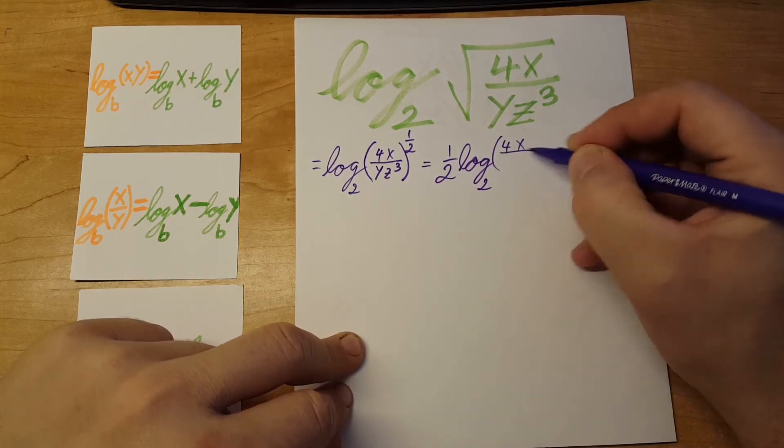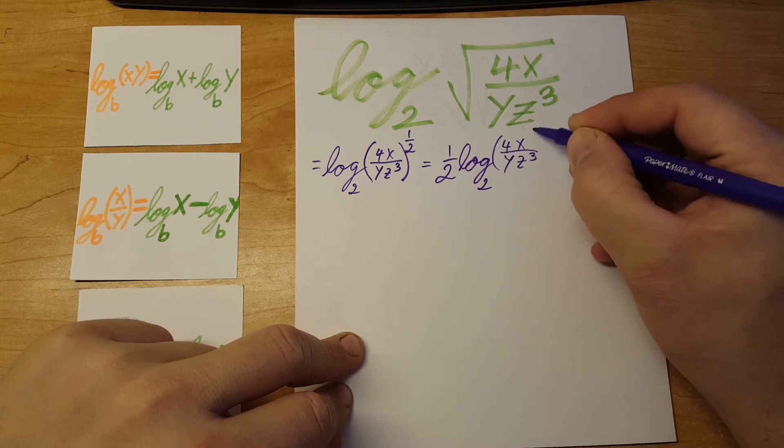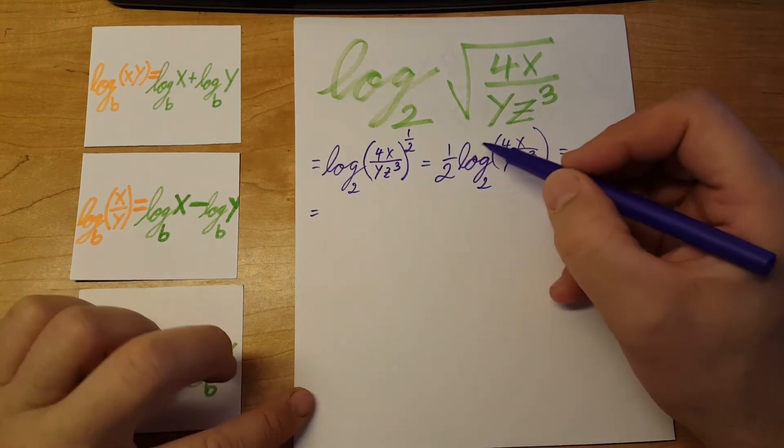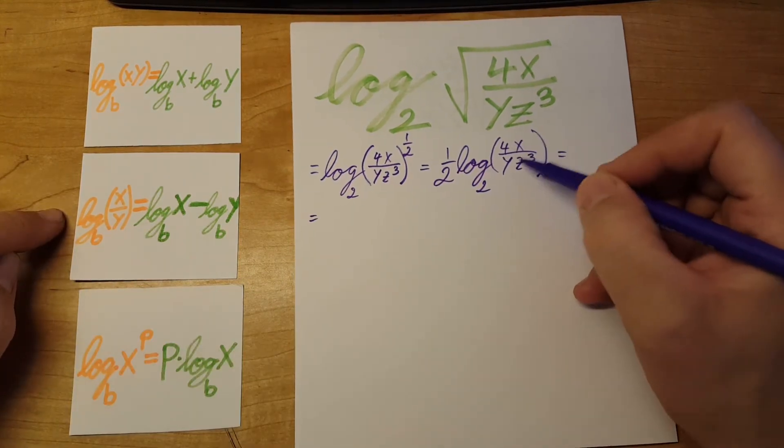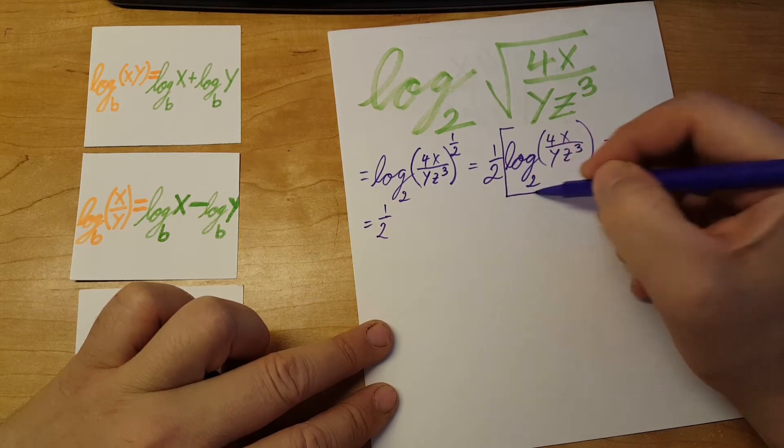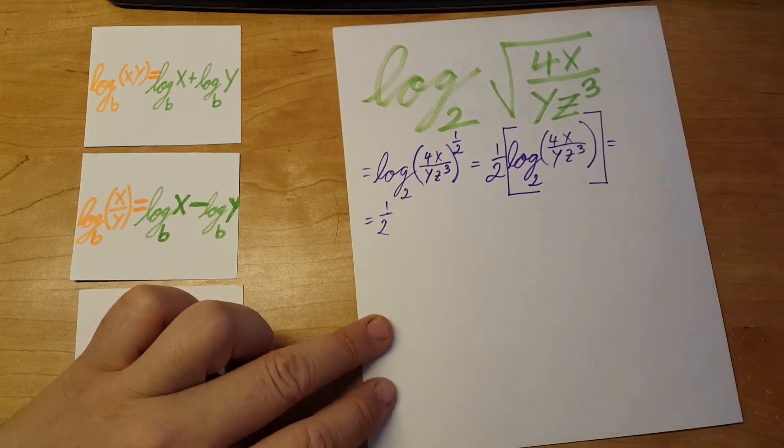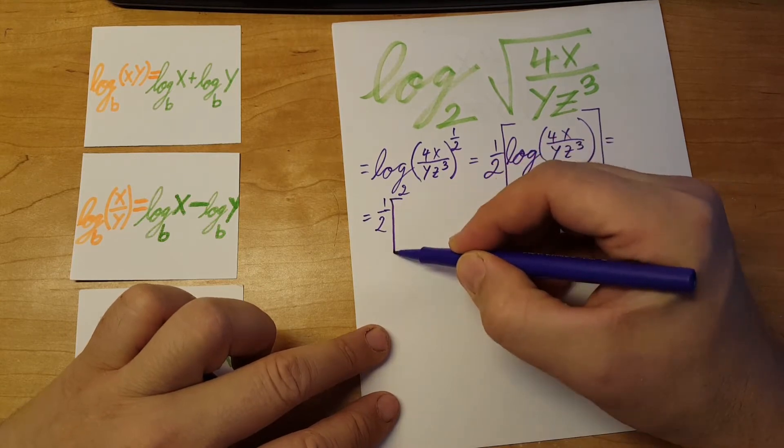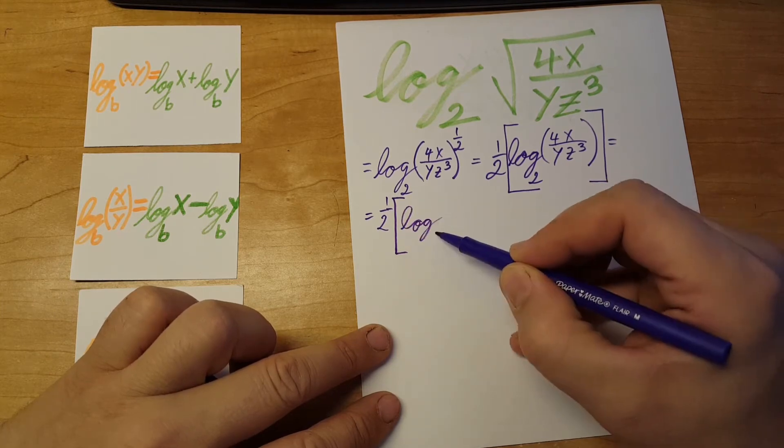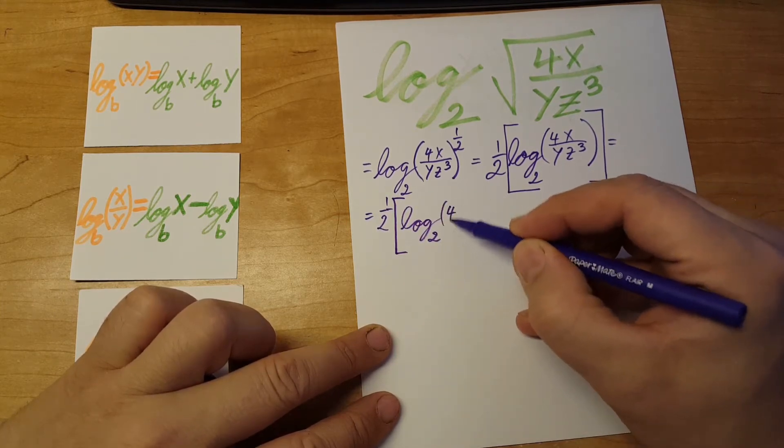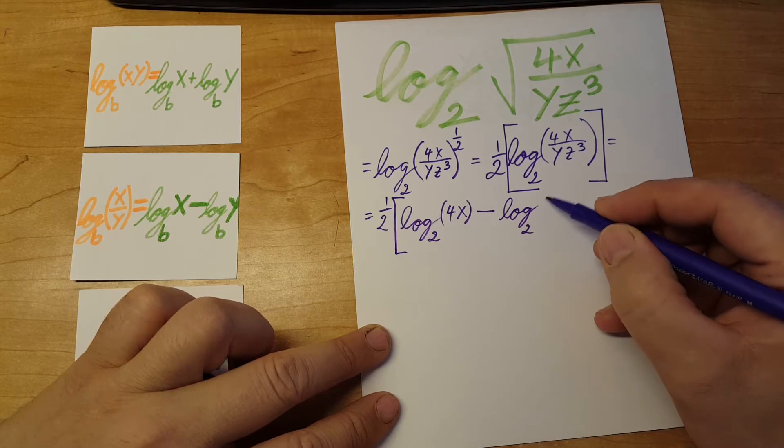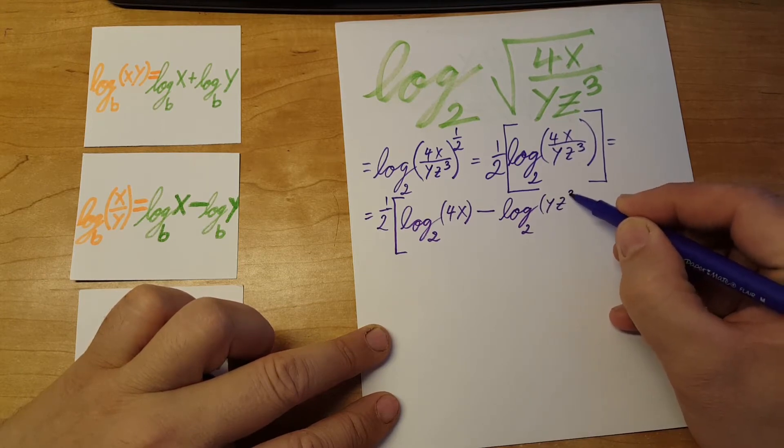Now we're going to use the quotient rule to break this up. This one-half is going to multiply everything. I'm going to put brackets around it just so we can keep track easier. So quotient rule: one-half times [log base 2 of 4x minus log base 2 of yz cubed].